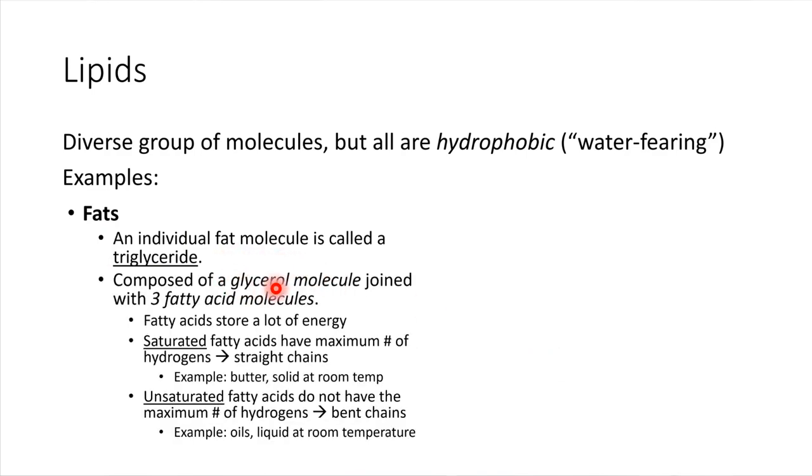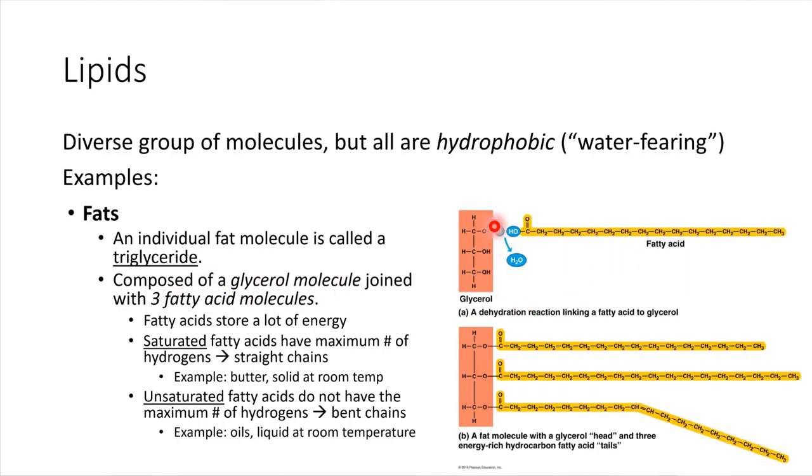Triglycerides have what's called a glycerol molecule and three fatty acid molecules attached to it. Here is a glycerol molecule. Here is a fatty acid molecule. We need to have three of these fatty acids attached in order for it to be a triglyceride. In this schematic right here, this is a triglyceride: a glycerol molecule and one, two, three fatty acid chains attached.